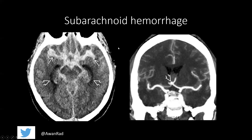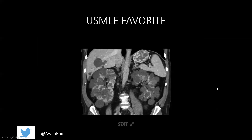Subarachnoid hemorrhage is mostly due to either trauma or rupture of an aneurysm. Here is a coronal CTA image showing the right ICA, left ICA, the MCAs bilaterally, the anterior cerebral arteries, and at the anterior communicating artery there is a focal dilation or outpouching of contrast — this is an anterior communicating artery aneurysm. A focal dilation or outpouching of a vessel is what you look for when identifying an aneurysm on CT.